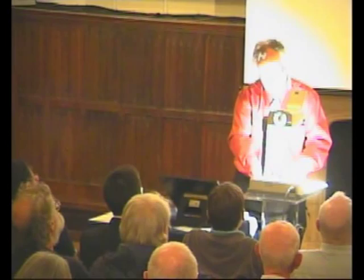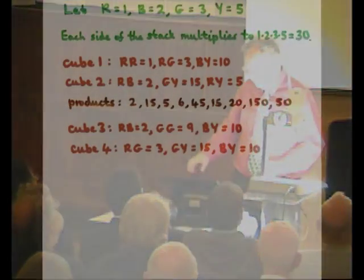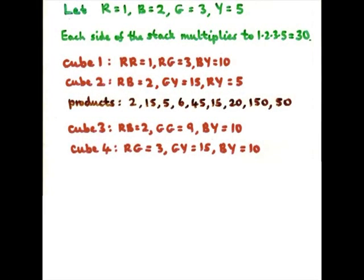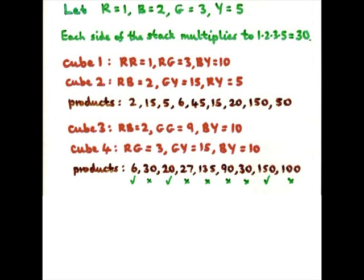Now we'll do the same for the third and fourth. The third cube has got red opposite blue, green opposite green and blue opposite yellow. You get their numbers. Cube 4 has got red opposite green, green opposite yellow and blue opposite yellow. You get 10. So for 3 and 4, doing the product, 2 times 3, 2 times 15, 2 times 10, 9 threes, 9 fiftieth, and so on, I get these. And I now need to combine these with these to give 900.